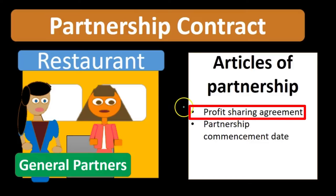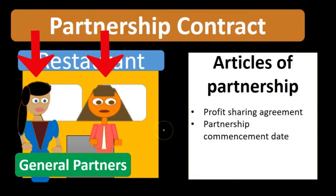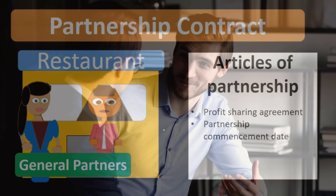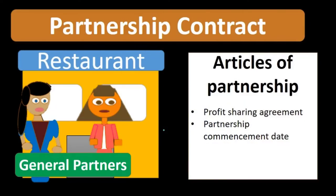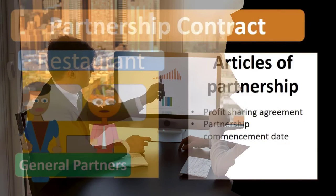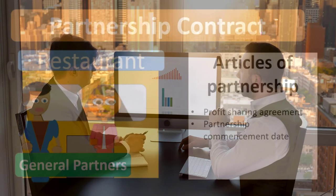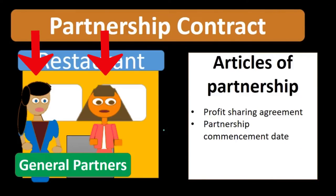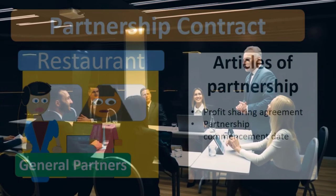If these things are not set up, it is typically assumed that profit will be shared at a 50/50 split. Some partners set up a partnership without putting in a clear set of goals in terms of the articles of partnership. It is highly recommended to set up as clear goals as possible so that everybody within the partnership knows what is expected from each individual partner.